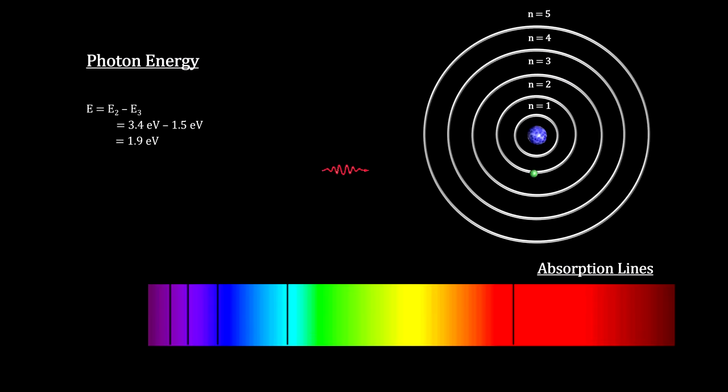Electrons radiate or absorb energy when they change energy levels. The emitted or absorbed light has the energy difference between the two levels. This energy is equal to Planck's constant times the frequency of the light.